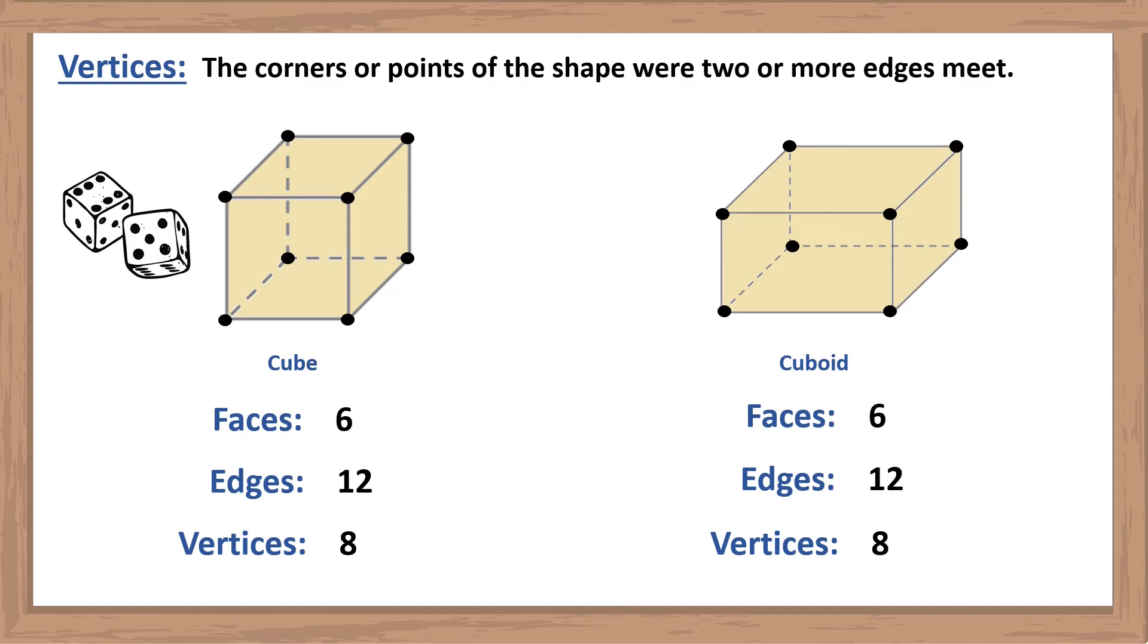Rolling dice are an example of a cube and boxes are examples of cuboids.